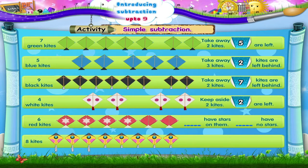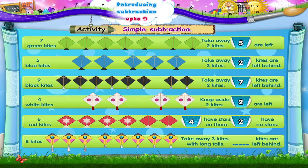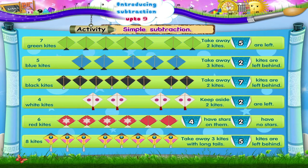Out of six red kites, four have stars on them and two have no stars. Take away three kites with long tails from eight kites — how many kites are left behind? Take away three from eight: five kites are left behind.